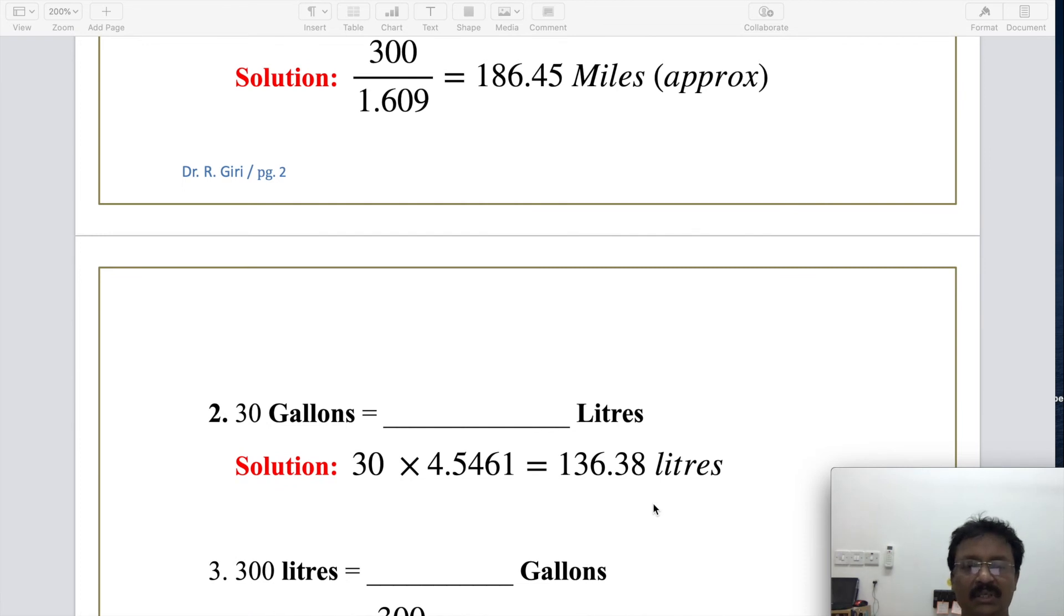Now come to liters to gallons, gallons to liters. 30 gallons, how many liters is 30 gallons? 30 times 4.5461. One gallon is 4.5461 liters, so I multiply with 30. It becomes 136.38 liters.